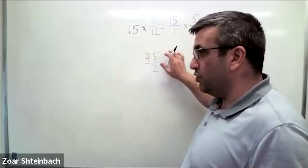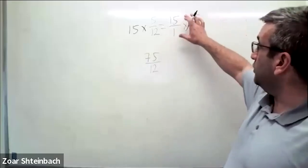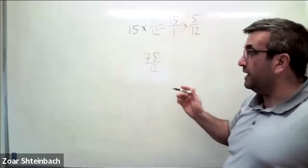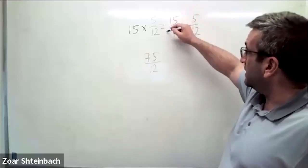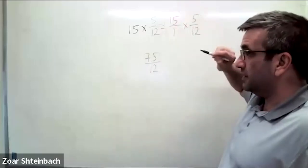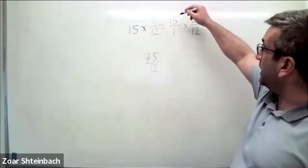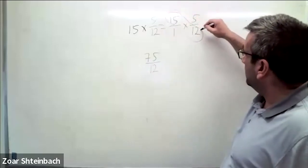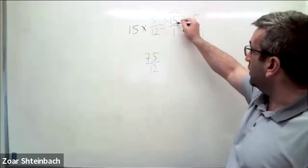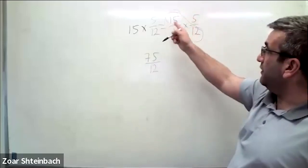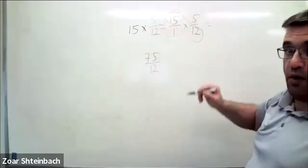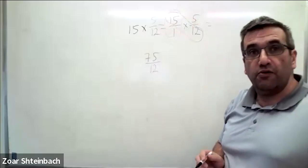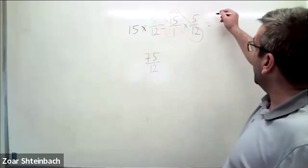What you do is do it at the beginning. When we multiply, we can do cross simplification. So you can simplify across, and we see that 15 and 12 are both multiples of 3, so we can simplify.